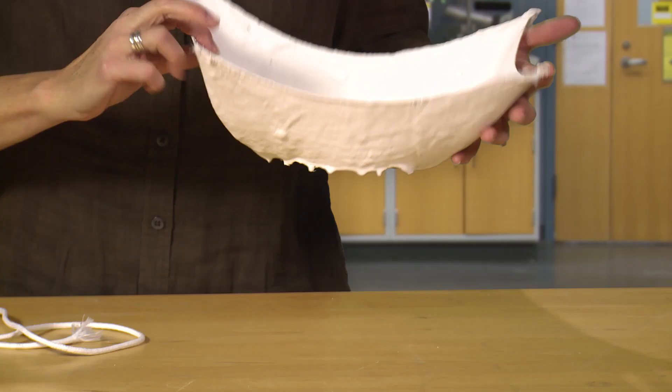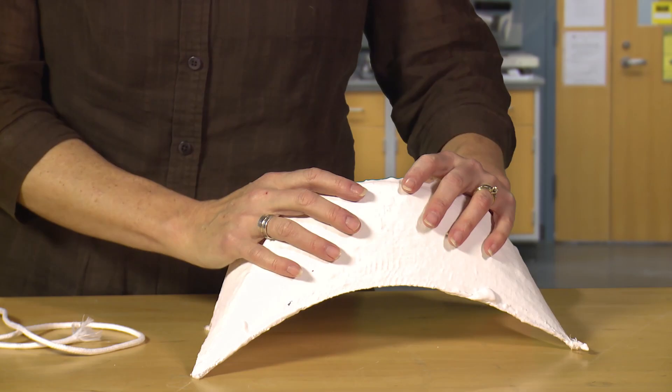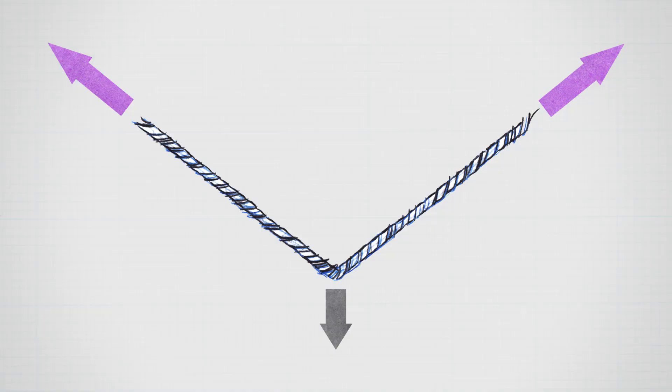If we take a funicular form and we flip it over, we get an anti-funicular form. As we flip it over, that tension that was in the funicular form changes to compression in an anti-funicular form.